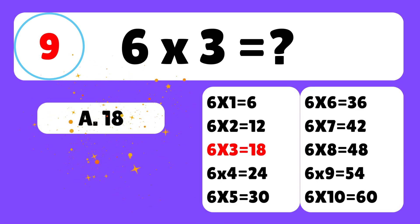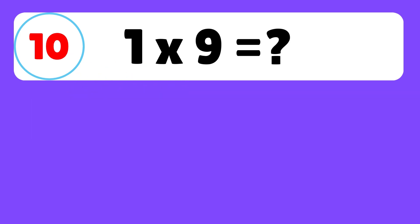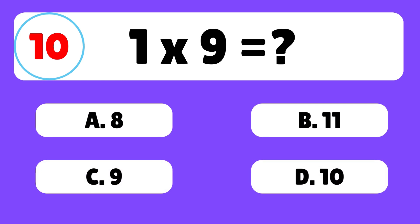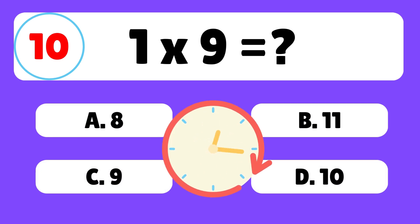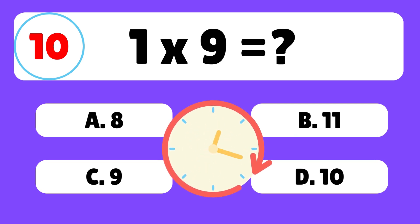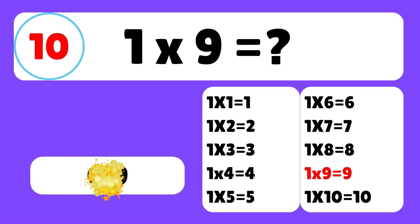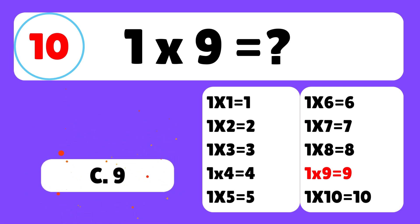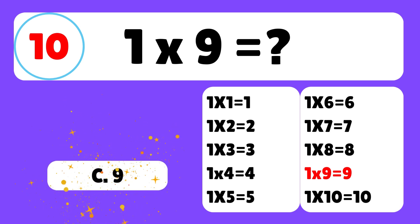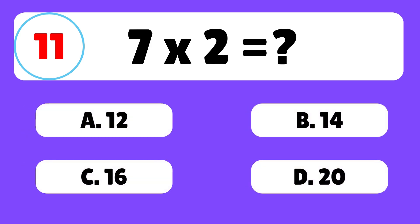Question nine: what is six times three? The answer is A — six times three is equal to eighteen. Question ten: what is one times nine? The answer is C — one times nine is equal to nine.